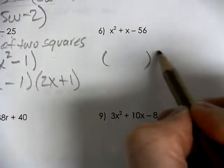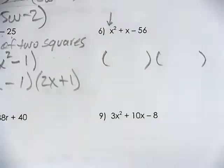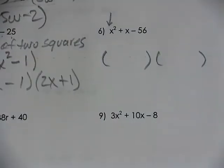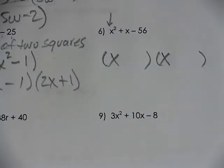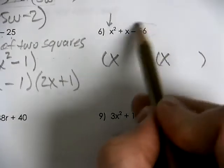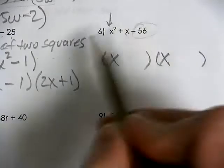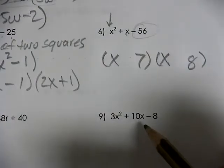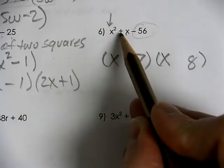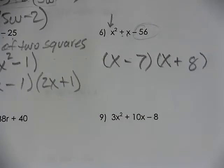Number 6 is a nice straightforward one. When the leading coefficient is 1, it makes life a lot easier — you know the first two terms are just x and x. Now you're thinking about what multiplies to be 56 and adds to be 1: two numbers that are 1 apart. That would be 7 and 8. They multiply to be 56, and for a positive sum the 8 has to be larger, so the 7 is negative.